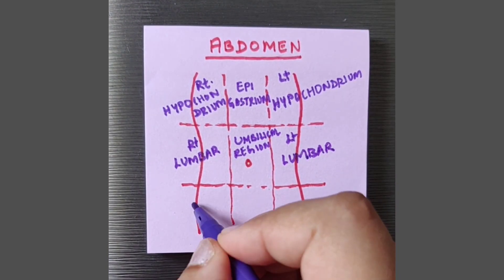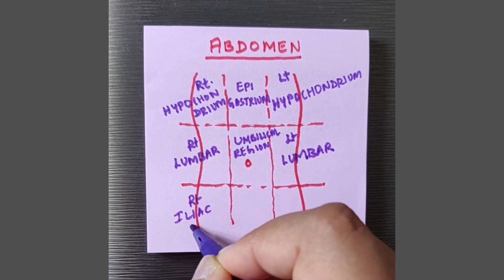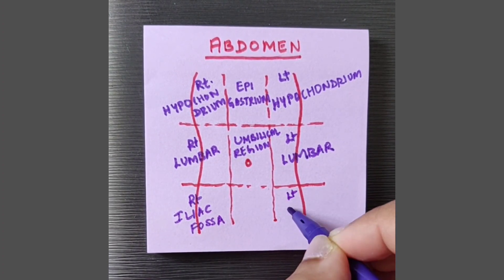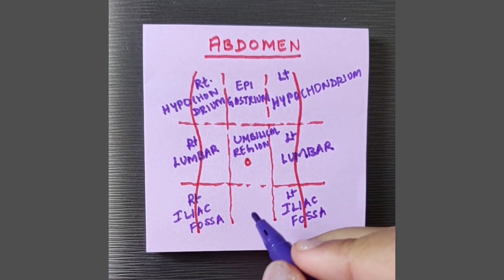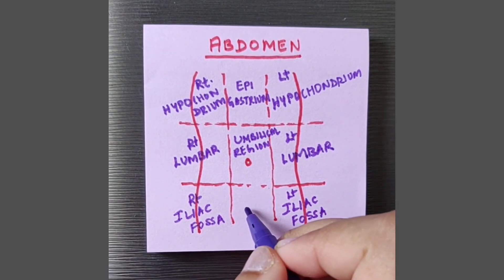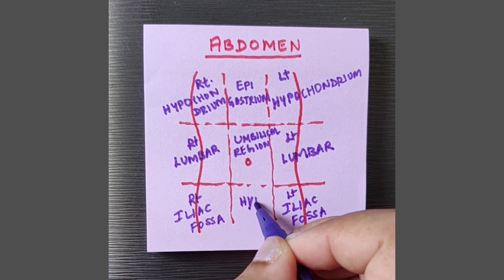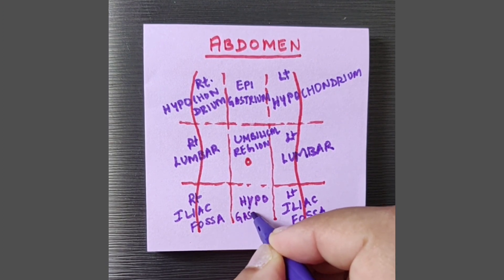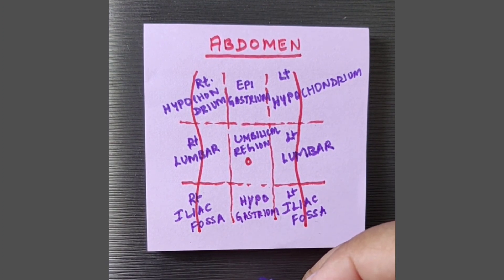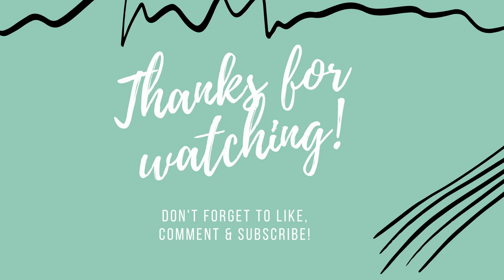You have your kidneys here. Then you have the right iliac fossa and the left iliac fossa here which is near the iliac bone. And then we have the hypogastrium here which is below the stomach.